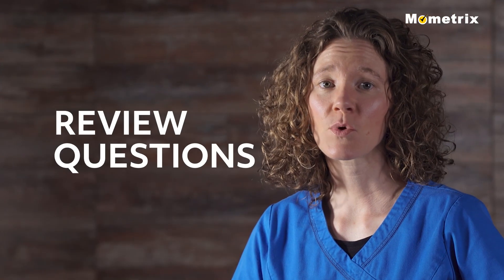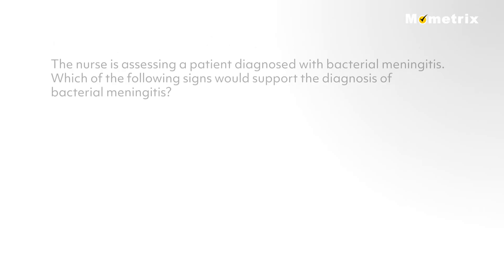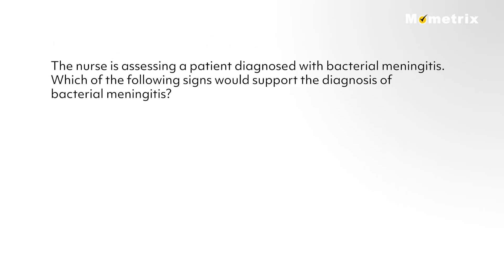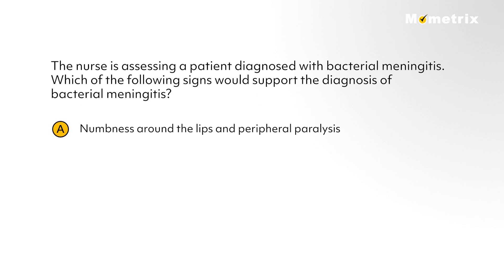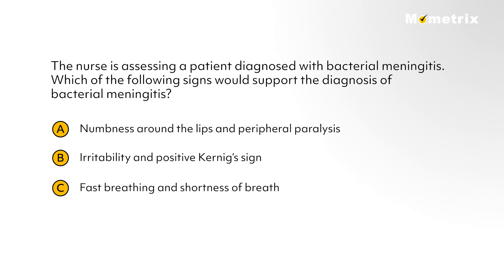The nurse is assessing a patient diagnosed with bacterial meningitis. Which of the following signs would support the diagnosis? A. Numbness around the lips and peripheral paralysis. B. Irritability and positive Kernig's sign. C. Fast breathing and shortness of breath. D. Nystagmus and positive Babinski's sign.